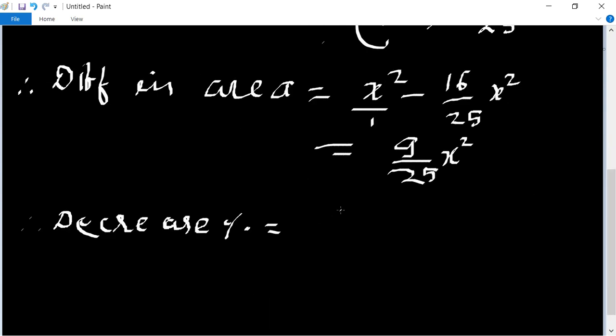The difference is 9 upon 25 x square upon x square into 100. So x square x square cancel, and the table of 25, 4 times.